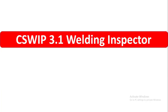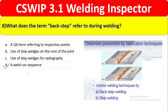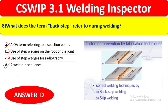Question 8: What does the term 'backstep' refer to during welding? Backstep welding means you finish one run and then start the next run from the beginning position of the previous one. For example, runs 1, 2, 3 proceed in one direction, then runs 4, 5, 6 begin from behind. This is a fabrication technique for distortion prevention, along with skip welding. The correct answer is Option D: a weld run sequence.